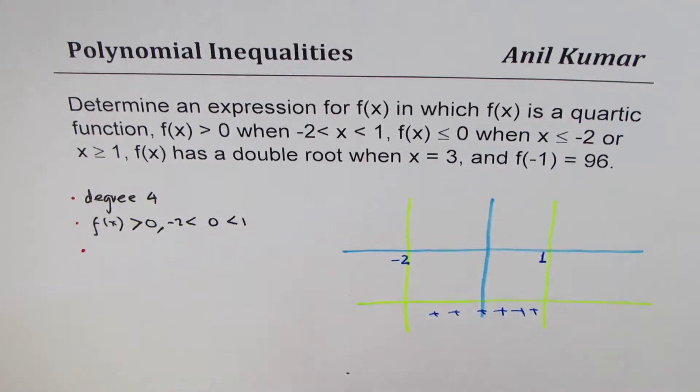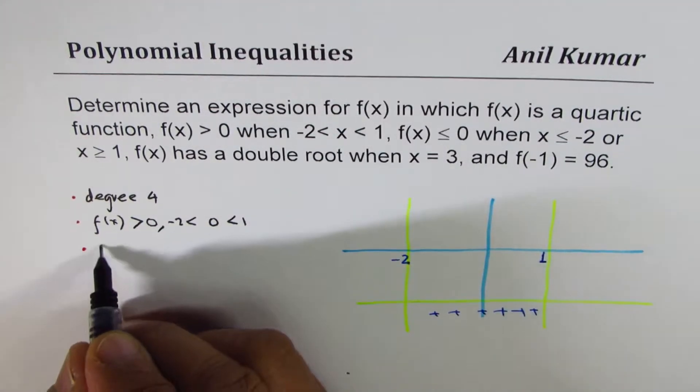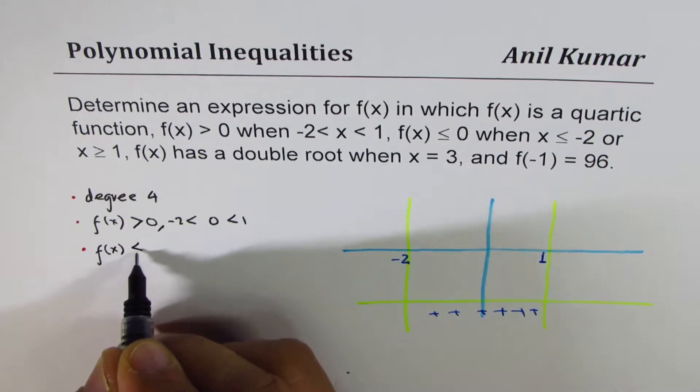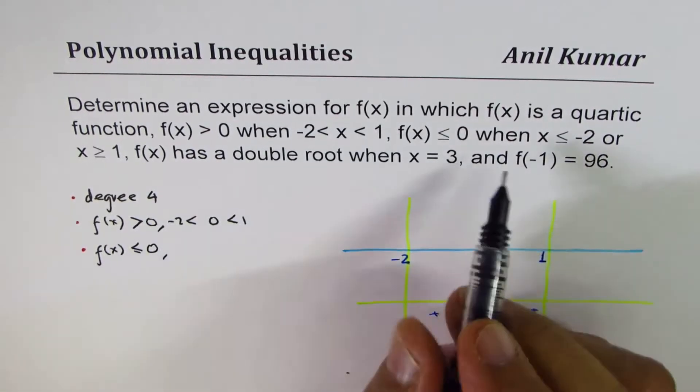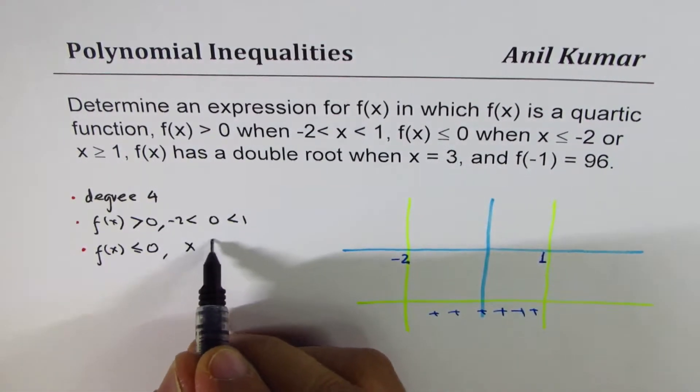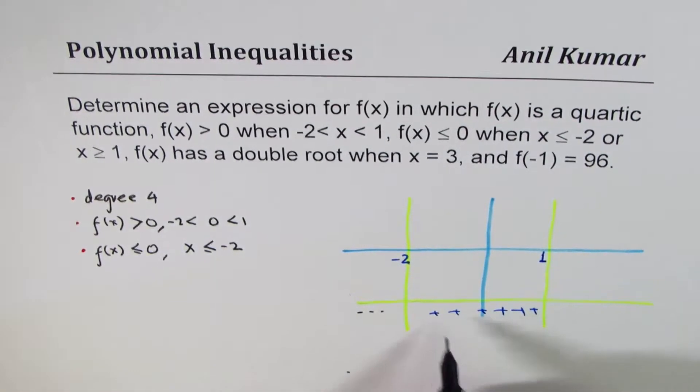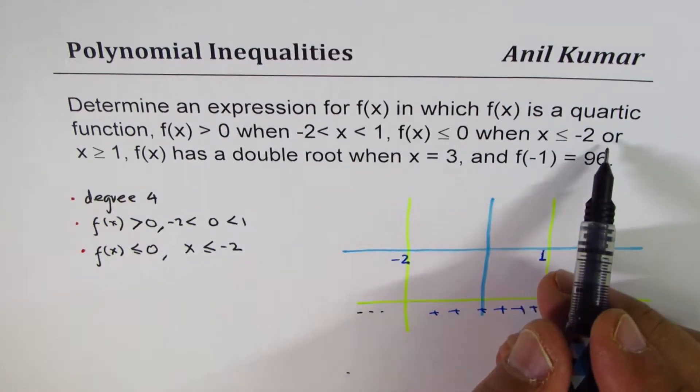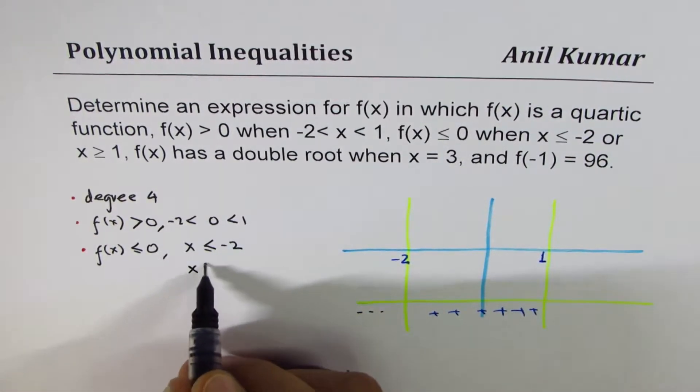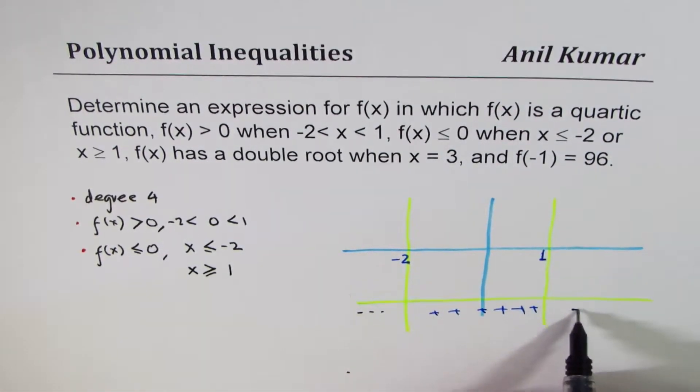It is given that f(x) is less than equal to 0. So, it could be 0 or negative. When x is less than equal to minus 2, so here it is negative. Let's say negative was 0. Or, when x is greater than equal to 1. Here also it is negative.